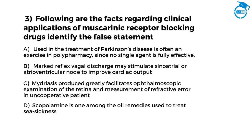The next question: following are the facts regarding clinical applications of Muscarinic Receptor Blocking Drugs — identify the false statement. Option A: used in the treatment of Parkinson's disease, often an exercise in polypharmacy since no single agent is fully effective. Option B: marked reflex vagal discharge may stimulate sinoatrial or atrioventricular node to improve cardiac output. Option C: mydriasis produced greatly facilitates ophthalmoscopic examination of the retina and measurement of refractive error in uncooperative patients. Option D: scopolamine is one among the remedies used to treat sea sickness.